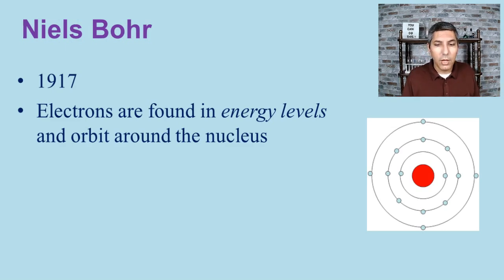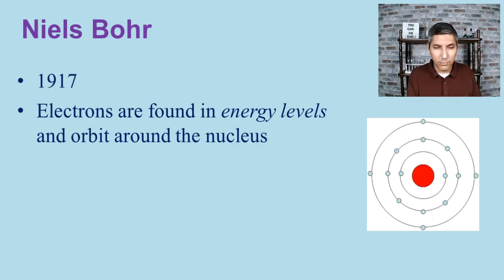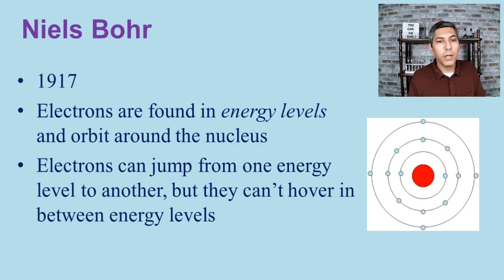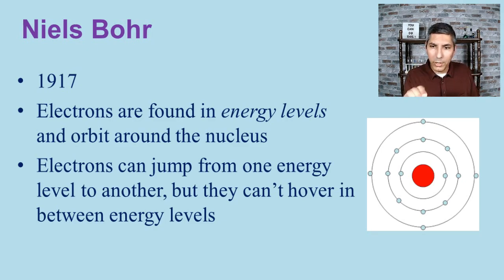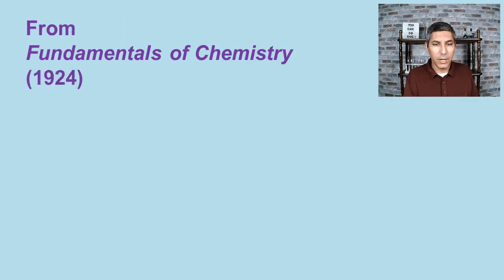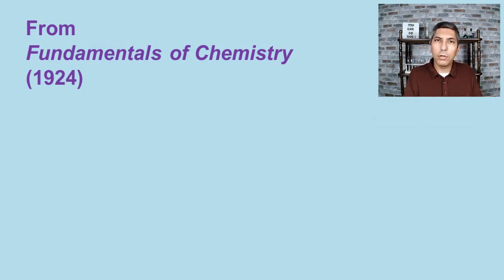Bohr also showed that electrons can jump from one energy level to another, but they cannot hover in between energy levels. He called this a quantum function — electrons can occupy one energy level or another and jump between them, but they cannot exist in an intermediate state.